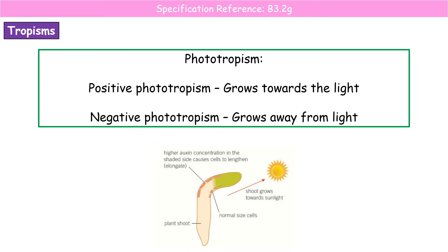Let's have a look at phototropism first. Photo meaning light, tropism meaning growth in response to — so this is the growth in response to light. We have two terms: positive or negative phototropism. Positive phototropism means it grows towards the light, so this is things like our shoots — they grow towards the light to maximize the amount of light they can absorb for photosynthesis.